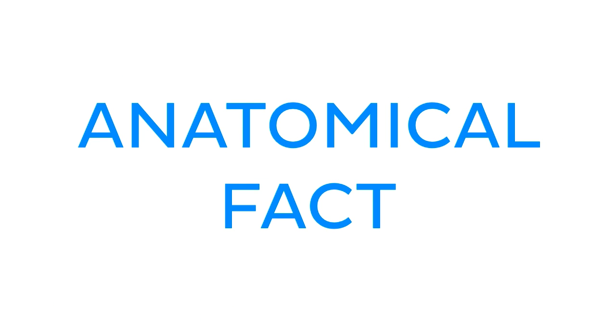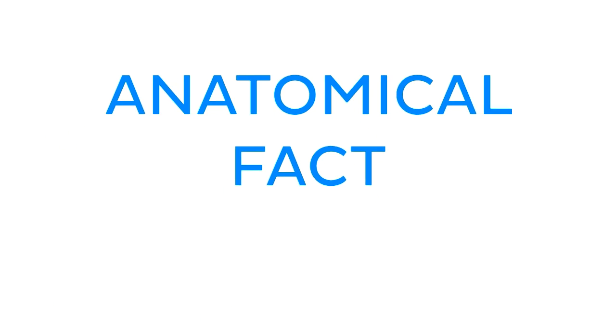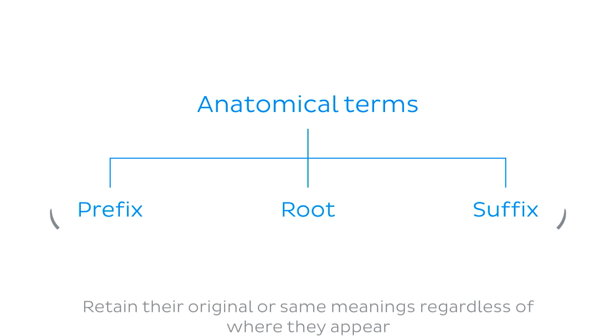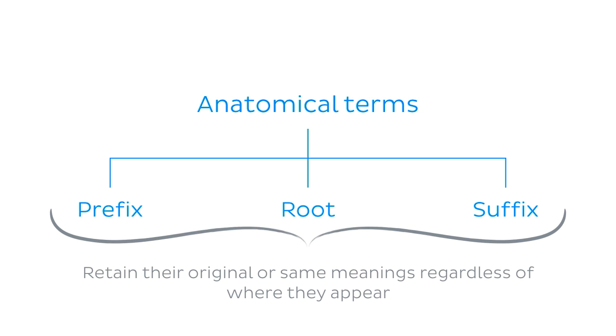In practical terms, this means taking advantage of the following fact: most anatomical terms are formed using two or three main word parts or components. These are prefixes, roots, and suffixes. These elements retain their original meaning regardless of where they appear. Let's look at these different types of word elements.